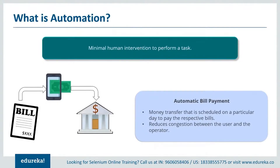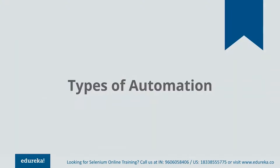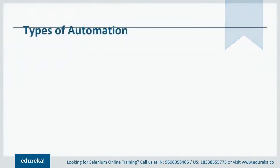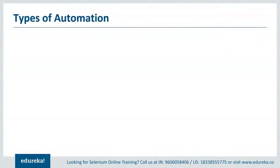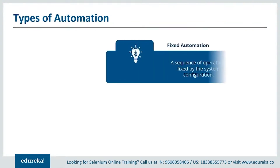Now that you've understood what automation is, let's try to understand the different types of automation that exist. There are basically three types of automation depending on the process which the user defines: fixed automation, programmable automation, and flexible automation. Fixed automation is the sequence of various operations that remains fixed and cannot be scheduled or customized by the user. This type of automation is mainly used in the mechanical industry to carry out a desired job.